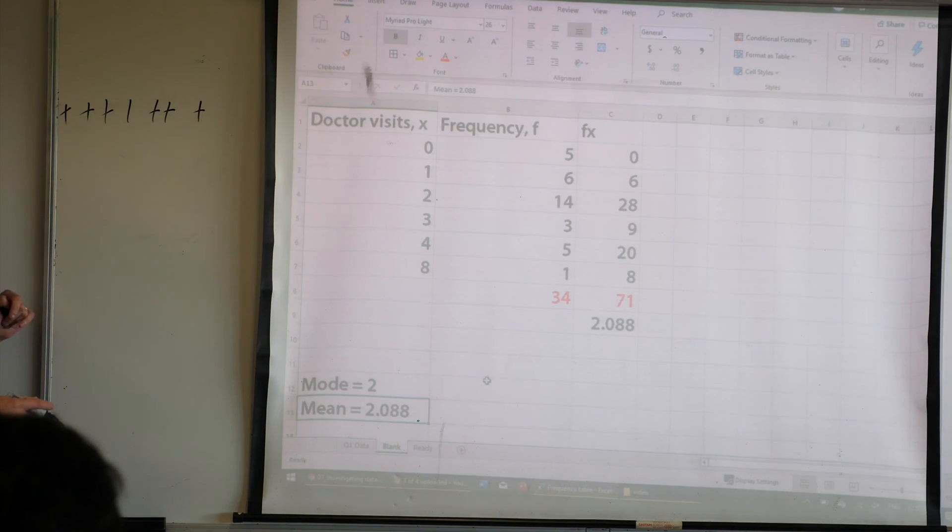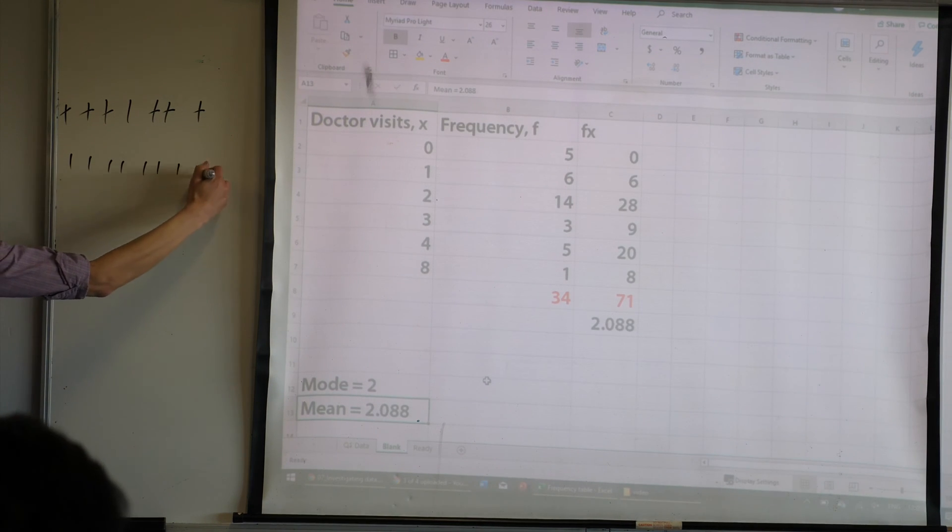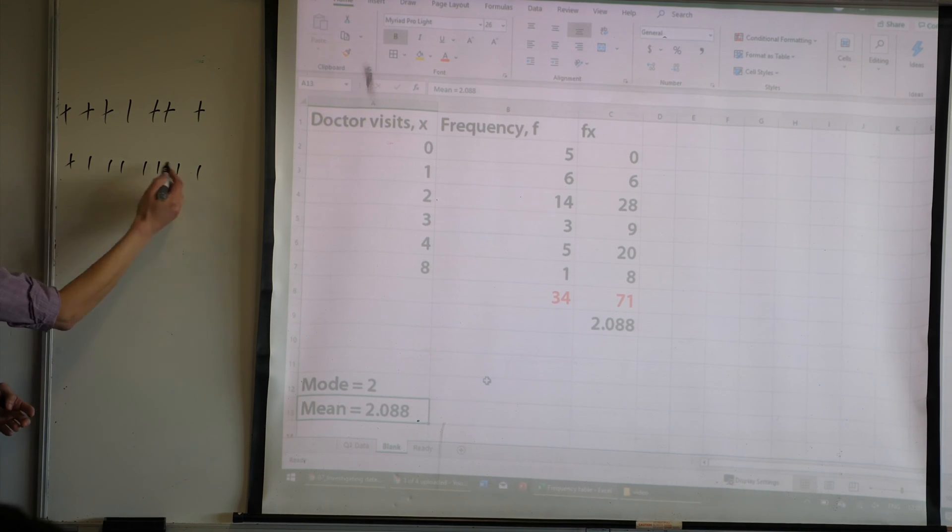What if there is two? What if there is two? Great question. One, two, three, four, five, six, seven, eight. So if I tried this, right, I would go cross, cross, cross, cross, cross, cross, and then I'm like, oh, what do I do in here?